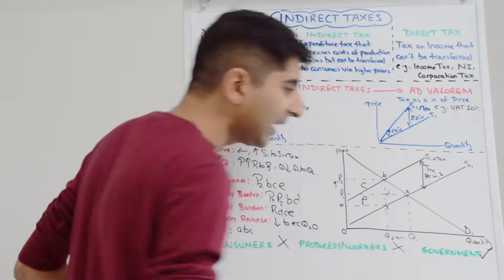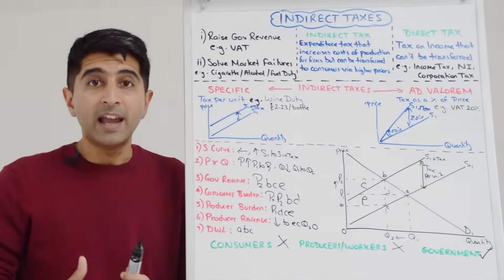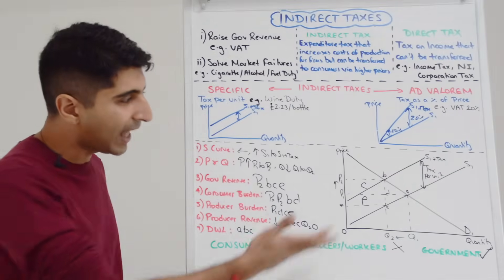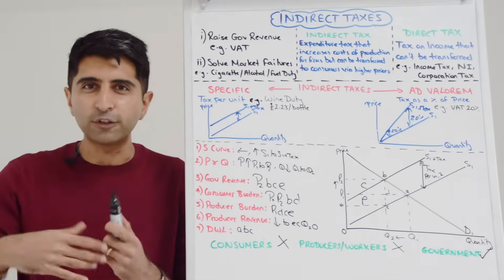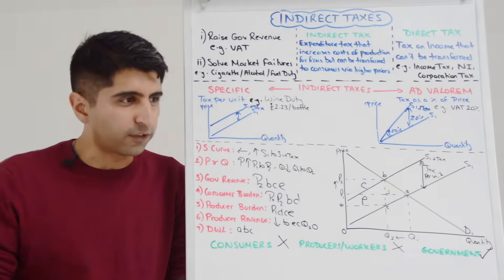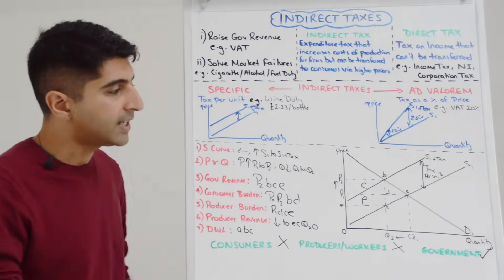What about the government? In theory the governments are going to like indirect taxes because they might hit their two key goals. If they're raising revenue, government's going to like that, we can see the revenue on the diagram. If they're solving key market failures, reducing consumption and production of goods and services that do a lot of harm to society, they're going to like the fact that they're solving those market failures.